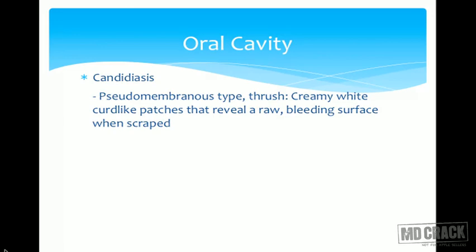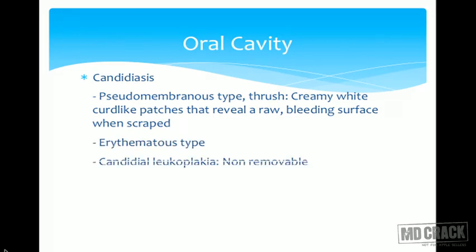Candidiasis is of three types. First is pseudo membranous type, commonly known as thrush. In this, creamy white curd-like patches reveal a raw bleeding surface when scraped. This can be asked as an MCQ: what are the diseases in which patches when removed bleed? One of them is Candidiasis.